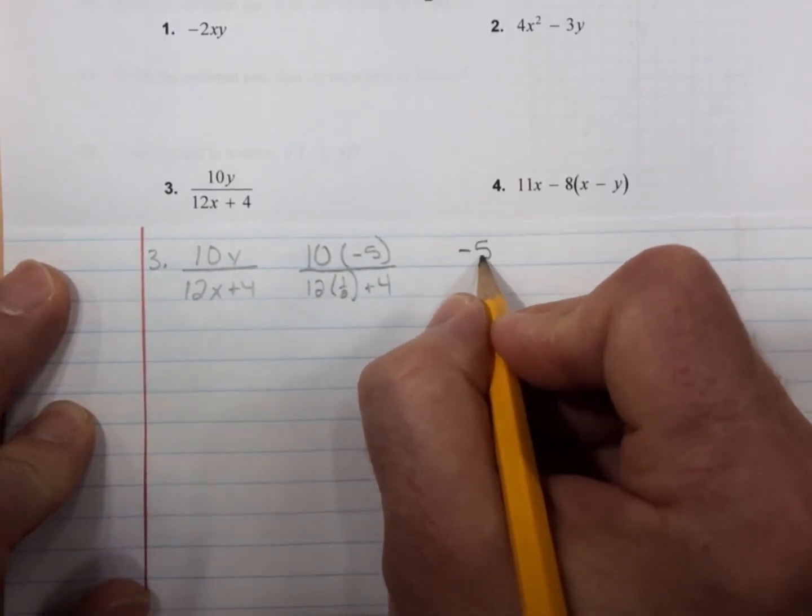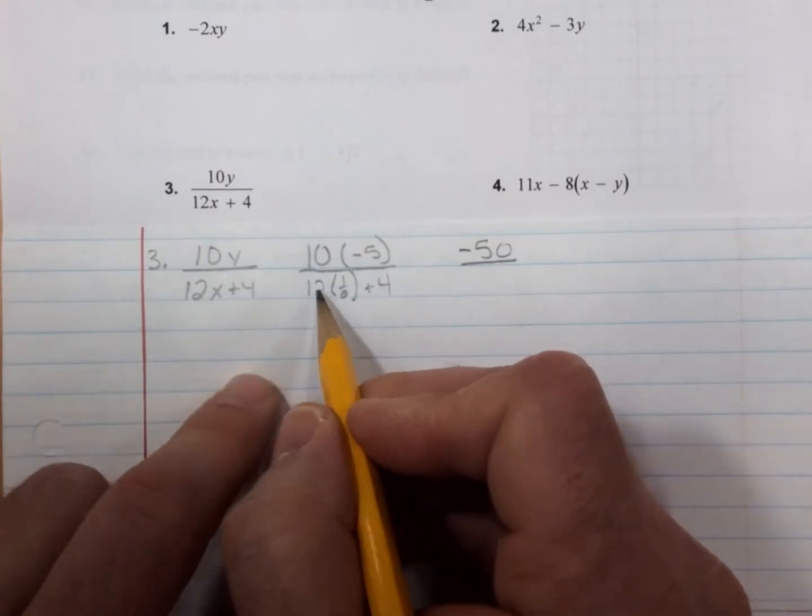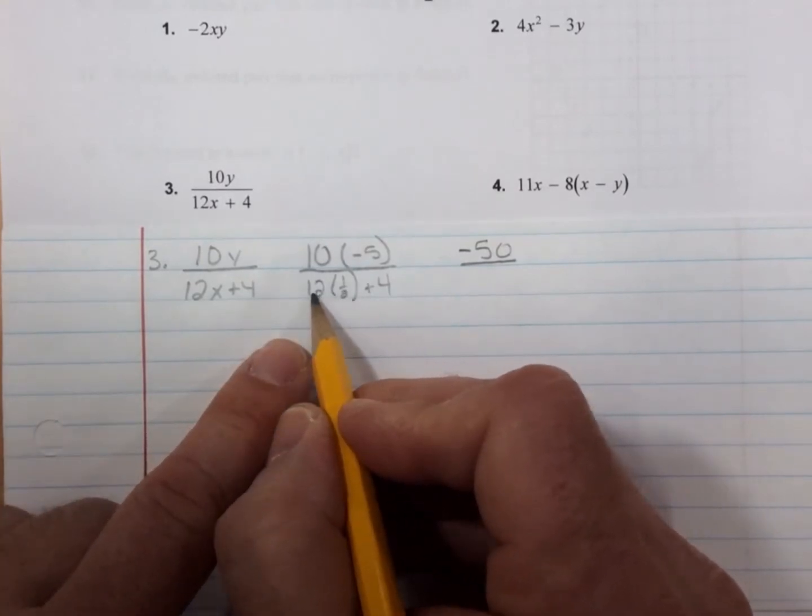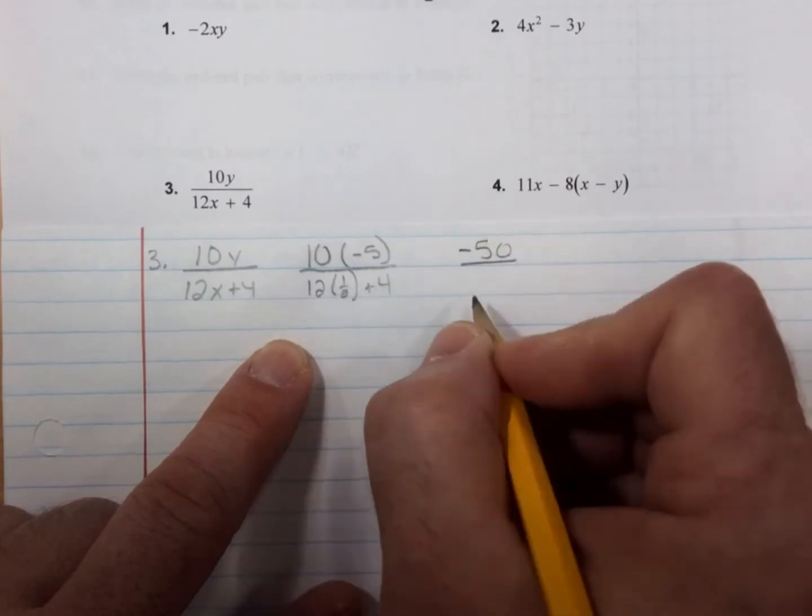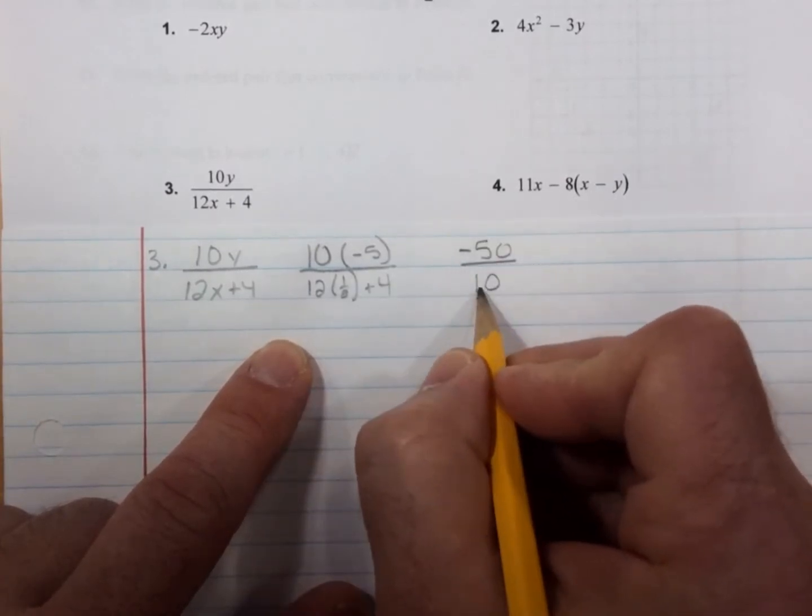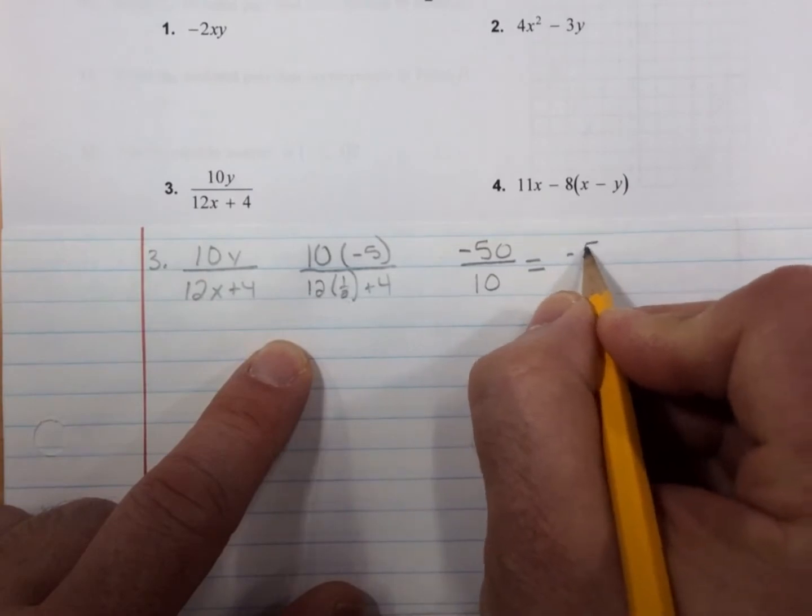And simplifying the bottom, we do this multiplication first. 12 times 1/2 is 6 plus 4 is 10. And -50 over 10 is the same as -5.